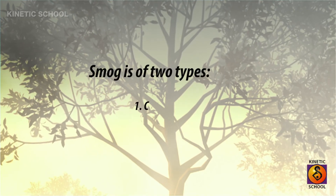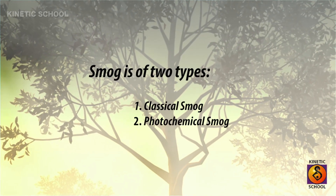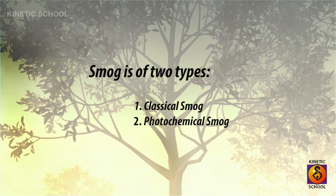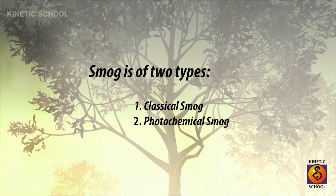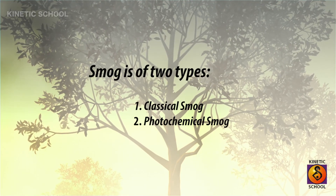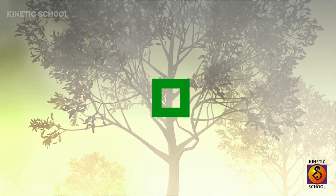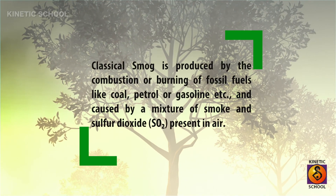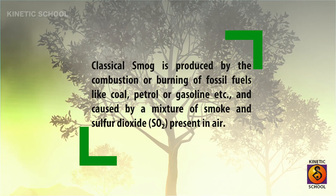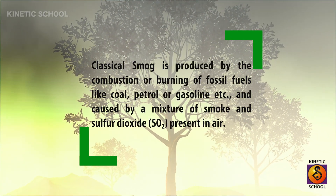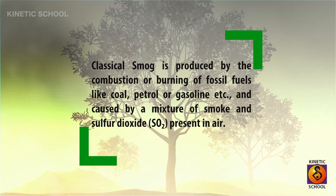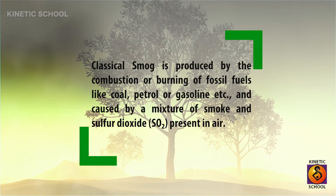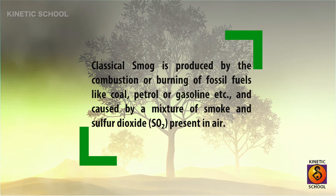Smog is of two types: one is classical smog, and another is photochemical smog. Classical smog is produced by the combustion or burning of fossil fuels like coal, petrol, or gasoline, and is caused by a mixture of smoke and sulfur dioxide present in air.